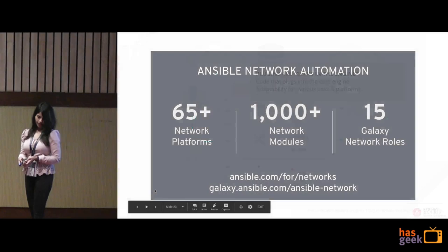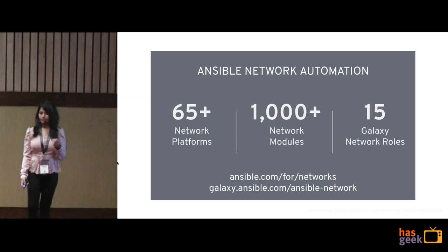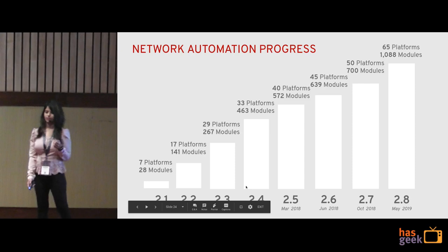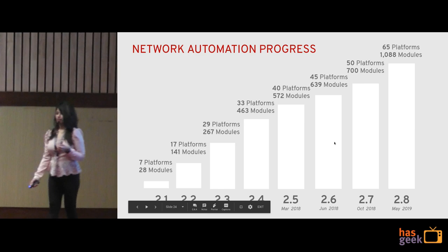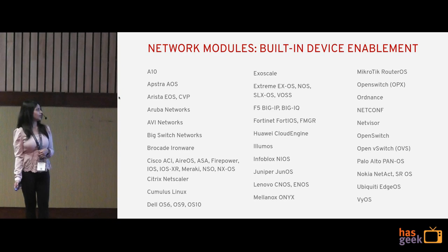Currently we have 65-plus networking platforms, 1,000-plus network modules, and 50 Galaxy roles supported. We started with Ansible 2.1, which had seven platforms and 28 modules. As of the 2.8 release this year in May, we now have 65 network platforms and 1,098 modules. These include mostly commonly used platforms like Cisco, Juniper, and others.